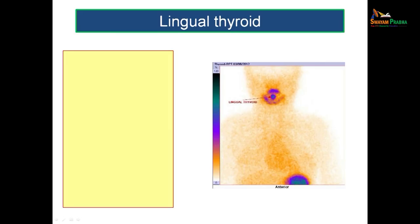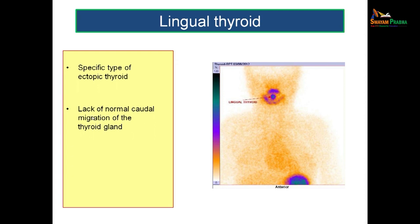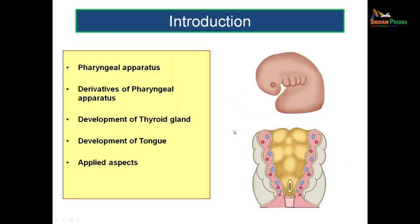Before moving on to the topic, let us discuss a condition known as Lingual Thyroid. You all know the thyroid is seated in the neck. So what do you mean by Lingual Thyroid? This is a type of ectopic thyroid — ectopic thyroid means the thyroid which is not seen in the usual position. There is lack of normal caudal migration of the thyroid gland from its initial position, which results in Lingual Thyroid. In order to understand such anomalies, you should first know how the thyroid gland normally develops.